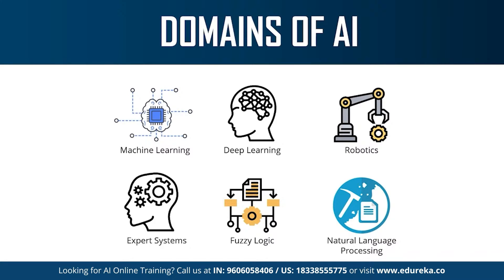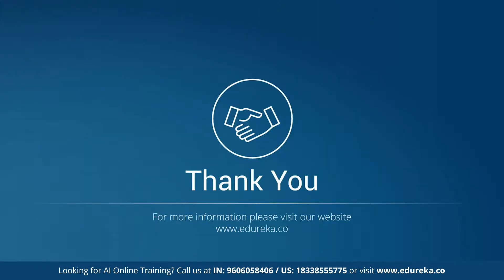Then we have expert systems — an AI-based computer system that learns and reciprocates the decision-making ability of a human expert. Expert systems use if-then logic notions to solve complex problems and do not rely on conventional procedural programming. They are mainly used in information management and are seen in fraud detection, virus detection, and managing medical and hospital records. AI is a very vast field — if you want to learn more, I'll leave a couple of links in the description box. That's all for today. I hope all of you enjoyed the session — until next time, happy learning.